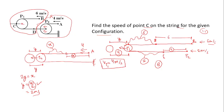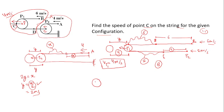So the pulley P1 is moving with speed 4 meters per second. Now we have to find the speed of point C, which is on the string — not on the pulley. This is a crucial point. We observe from the frame of reference of P1. P1 is moving at 4 meters per second. String B is moving at 6 meters per second, so relative to P1, B moves at 2 meters per second.